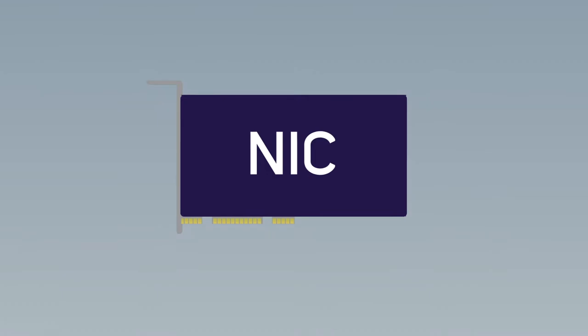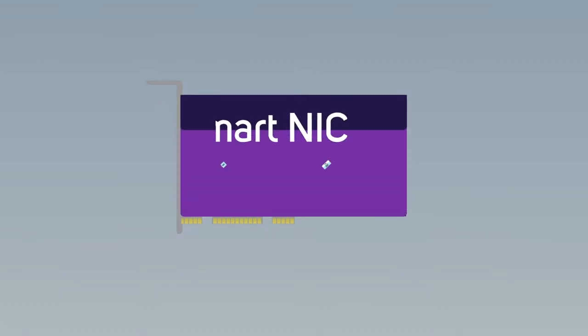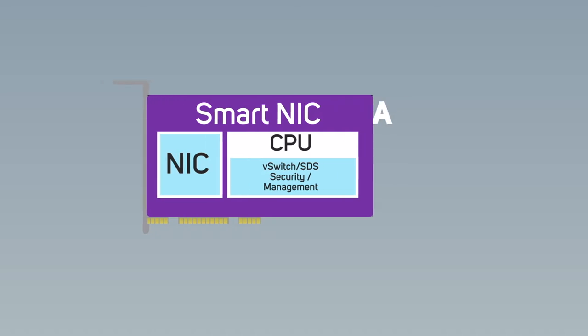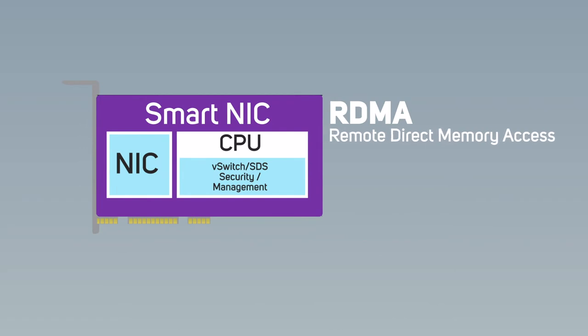For speeds above 10 gigabits per second, the concept of Network Card Offloading was developed to allow more of this processing to be done on the NIC, rather than involving the CPU, OS, and memory. This offloading is termed RDMA, standing for Remote Direct Memory Access, allowing direct access from the memory of one computer into that of another, without involving either one's operating system.